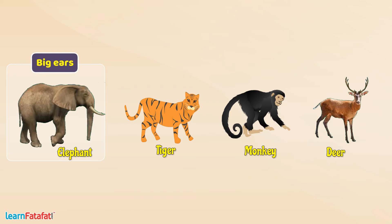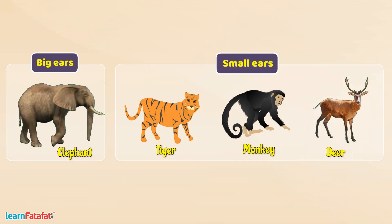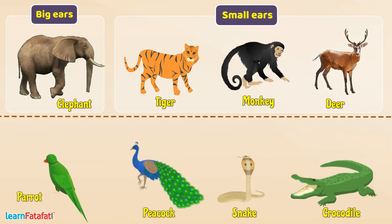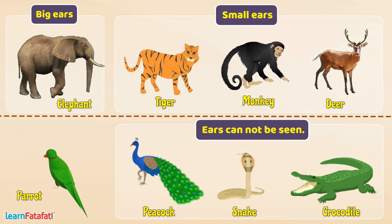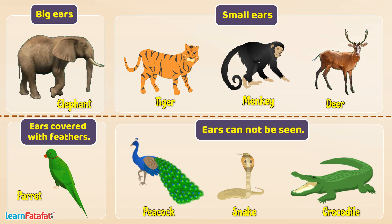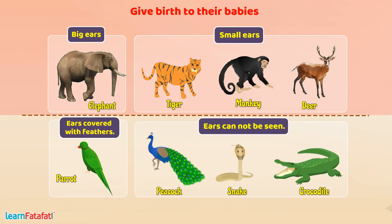Look at these animals and look at their ears. Some animals have big ears, some have small ears. Interestingly, the ears of some animals cannot be seen because they are just small holes, and in birds these holes are covered with feathers. Animals whose ears can be seen have hairs on their body and give birth to babies. Animals whose ears cannot be seen do not have hairs on their body and they lay eggs.